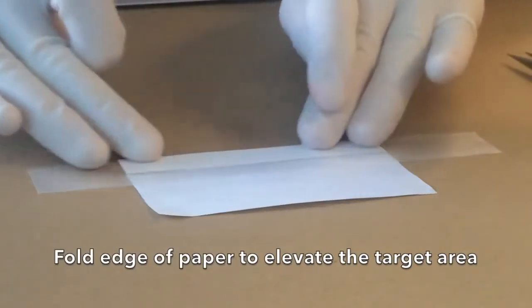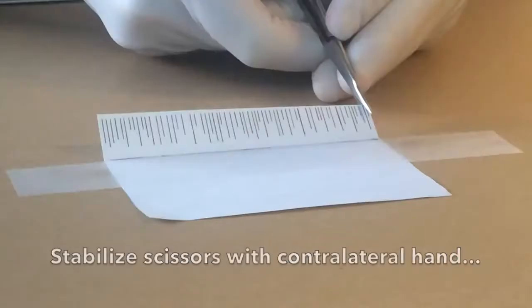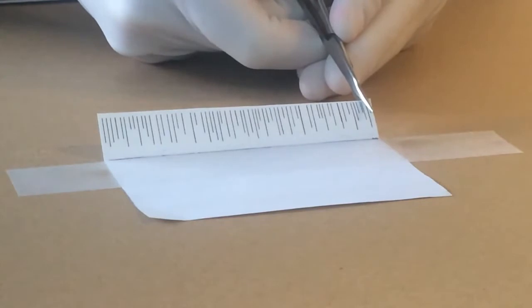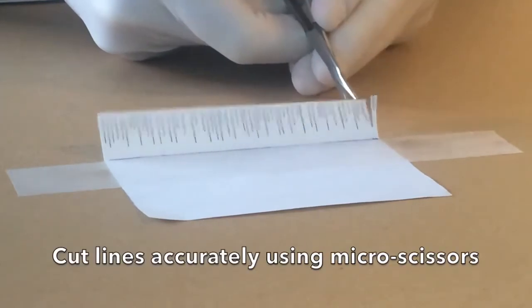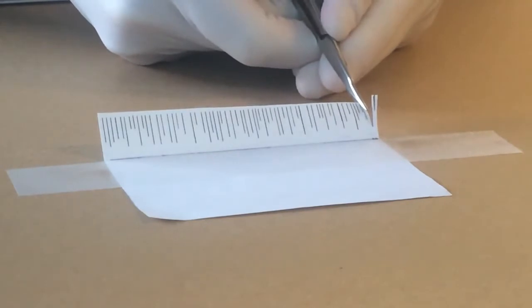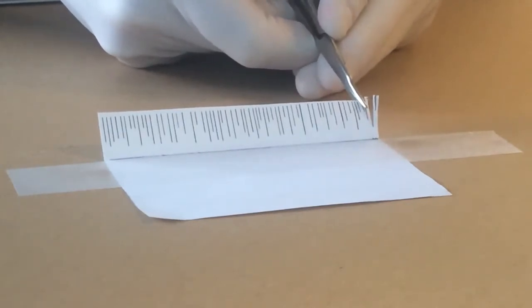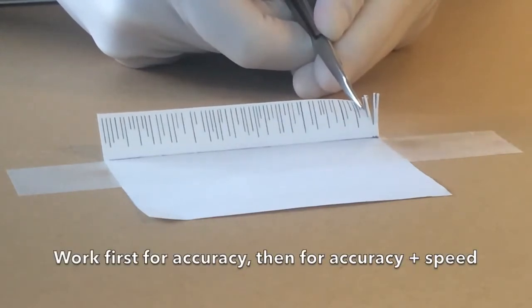The next model is the scissor cut base exercise. First fold the edge of the paper to elevate the target area. Secure the model to the table with tape. It is important to stabilize the scissors with the contralateral hand. The objective is to test the ability to cut the lines accurately using micro scissors. As always, work first for accuracy then accuracy plus speed.